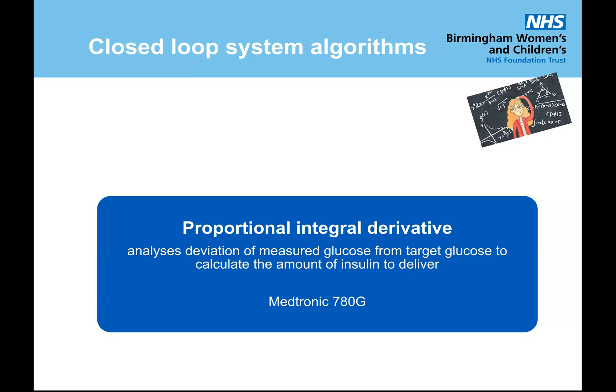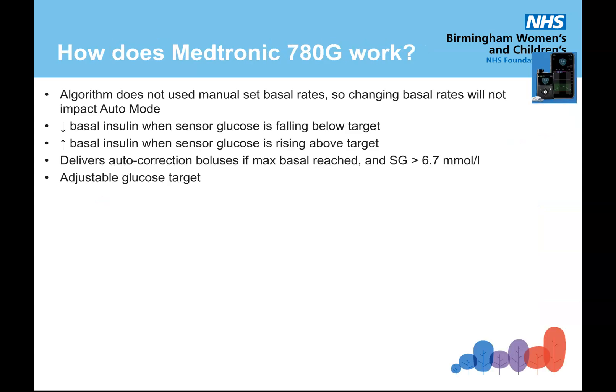It runs by a proportional integral derivative method which basically analyzes the deviation of measured glucose from a target glucose — where you want it to be — to calculate the amount of insulin to deliver. Importantly, the algorithm does not use manually set basal rates, so changing the basal rates will not impact auto mode, and it will therefore keep up to date with the person's individual needs on an ongoing basis.